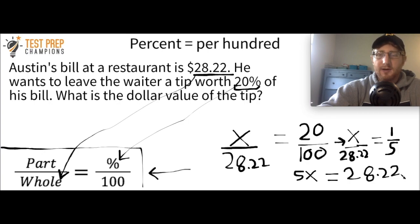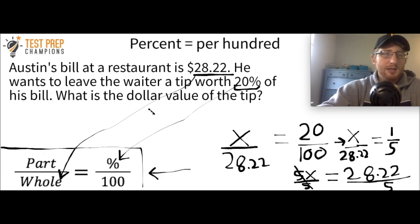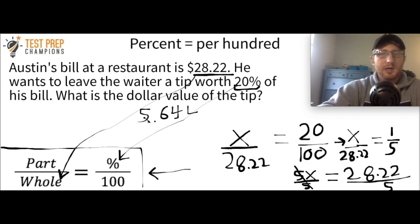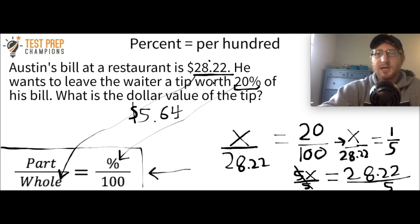So Austin would be paying $5.64 for the tip. To find the total amount he's going to be spending, you would do 28.22 plus 5.64. I was at Dave and Buster's last weekend — if you've never been there, I'd recommend it. They actually put the tip right on the check when you go to pay. A lot of restaurants do that now, so depending on where you go, you might not even need to calculate this by hand anymore.